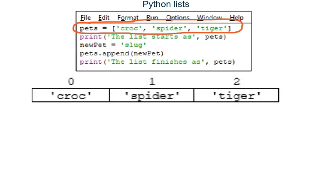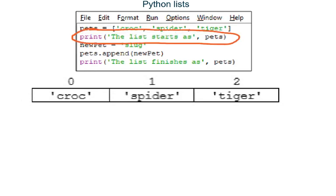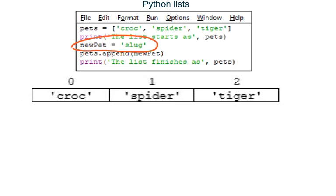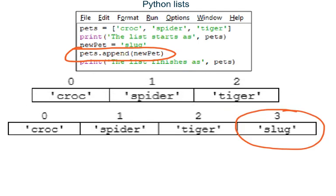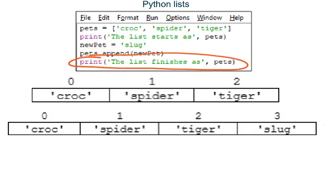This program again creates a list named pets with three elements in the first line. Line two outputs what is stored in the pets list at the start of the program. Line three creates a variable named new_pet and stores the string 'slug' inside it. Line four uses the append method. We use append to add a new element to the end of a list. So line four tells Python to append whatever is stored in variable new_pet to the end of our list, giving it an extra element containing the string 'slug'.